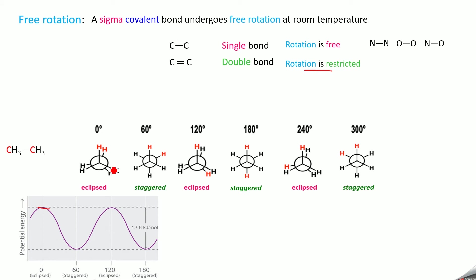Now, you fix the front carbon and rotate the back carbon. The potential energy decreases and it reaches a minimum value at 60 degrees. At 60 degrees, we get a form where all the groups are very far away, so there is no Van der Waals strain and no torsional strain. This form is highly stable with minimum potential energy and is called the staggered form. When you rotate from 60 degrees, the potential energy again increases and reaches maximum value at 120 degrees.